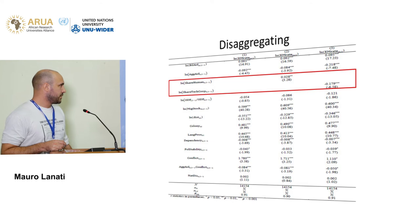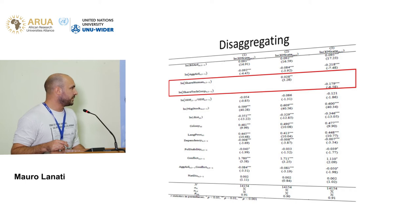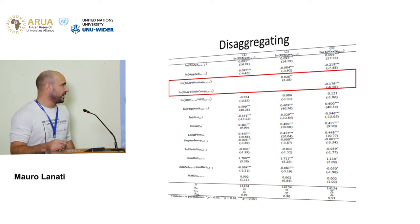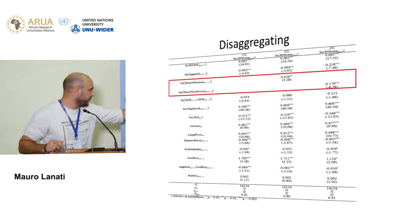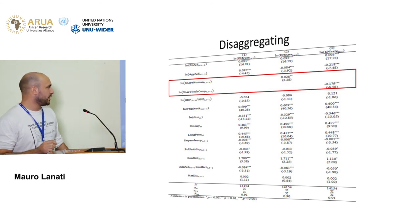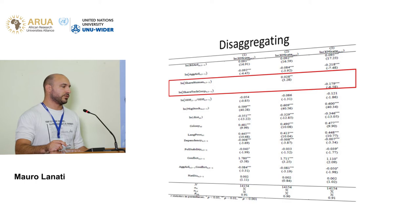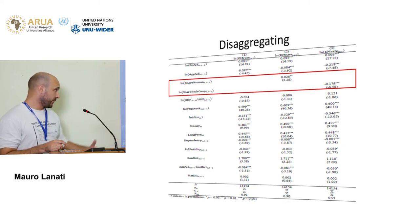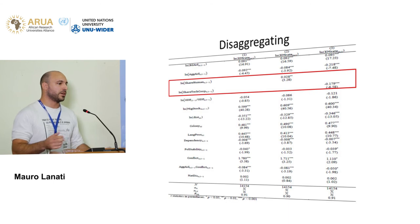Another robustness check is to look at different types of foreign aid — remember that one of the stylized facts was that aid is heterogeneous. Here we use the share of humanitarian aid and the share of technical cooperation, and we get actually opposite results. We get a positive sign for technical cooperation and a negative sign for humanitarian aid. The idea is that humanitarian aid is less development-oriented — it's very much a short-term type of aid sent for emergency reasons — whereas technical cooperation is more development-oriented. So this would point to the income channel story rather than the budgetary constraint story.